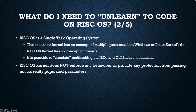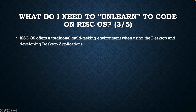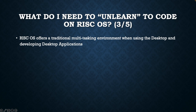The RISCOS kernel does not enforce any behavior or provide any protection from passing incorrectly populated parameters to the kernel. The RISCOS file system is not reentrant, and therefore all I/O requests from a user-based application have to be completed synchronously. RISCOS offers a traditional multitasking environment when using the desktop and developing desktop applications. In particular, the task scheduler offered by the desktop is cooperative. RISCOS also offers some facility to execute non-desktop applications in multitasking, like the task window, though such facilities always have some limitations.